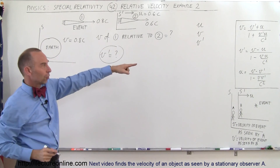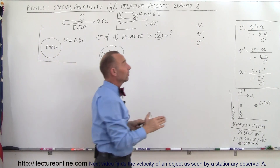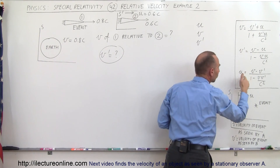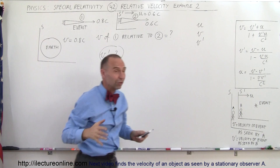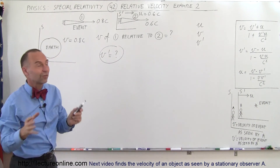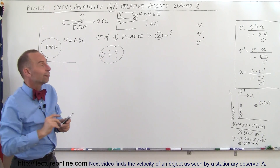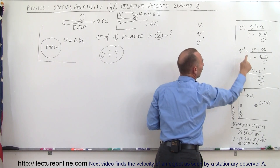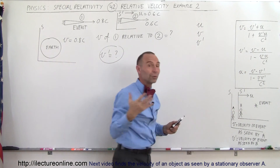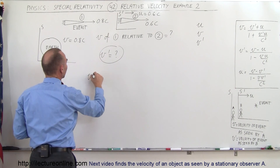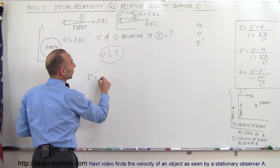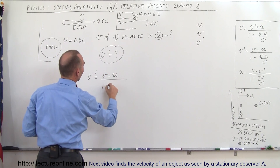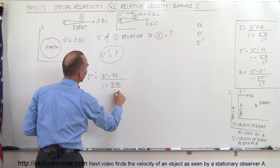We have the equation for V'. Notice that you can start with one of these equations and algebraically derive the second and third — they're not three different equations, but three forms of the same equation: one solved for V, one solved for V', and one solved for U.